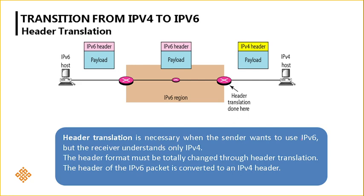The last technique is header translation. Header translation is necessary when the sender wants to use IPv6 but the receiver understands only IPv4. The sender is configured with IPv6 and the IPv6 region supports it, but the destination node can only understand IPv4. At the edge of the IPv6 region, we translate the IPv6 header into an IPv4 header.